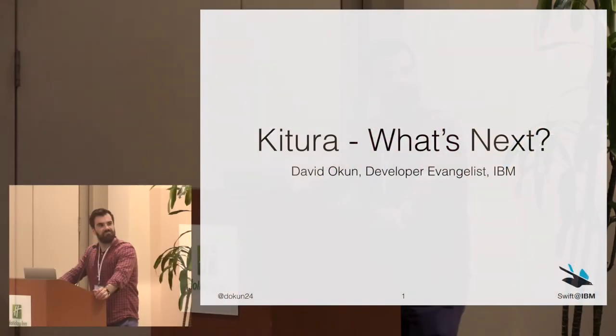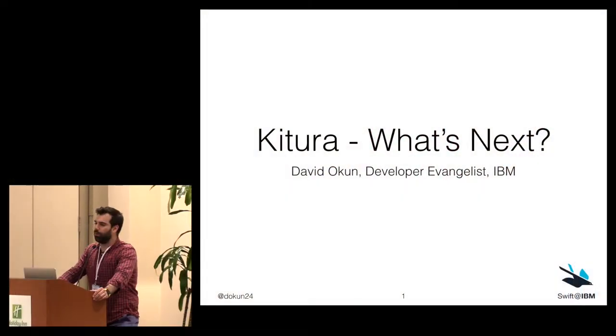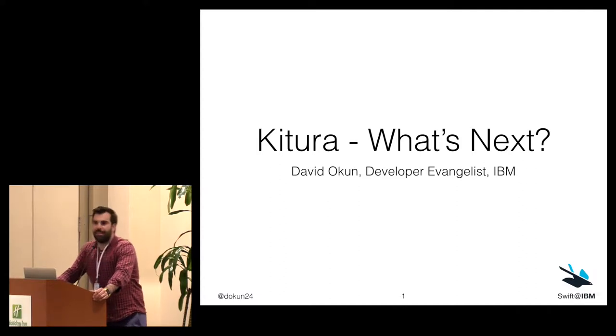Thank you so much for having me, everybody. My name is David Okun. I'm a developer evangelist for IBM, also known as StrongLoop. IBM acquired StrongLoop, and I work with that company on API tooling. I also work with the Swift team.